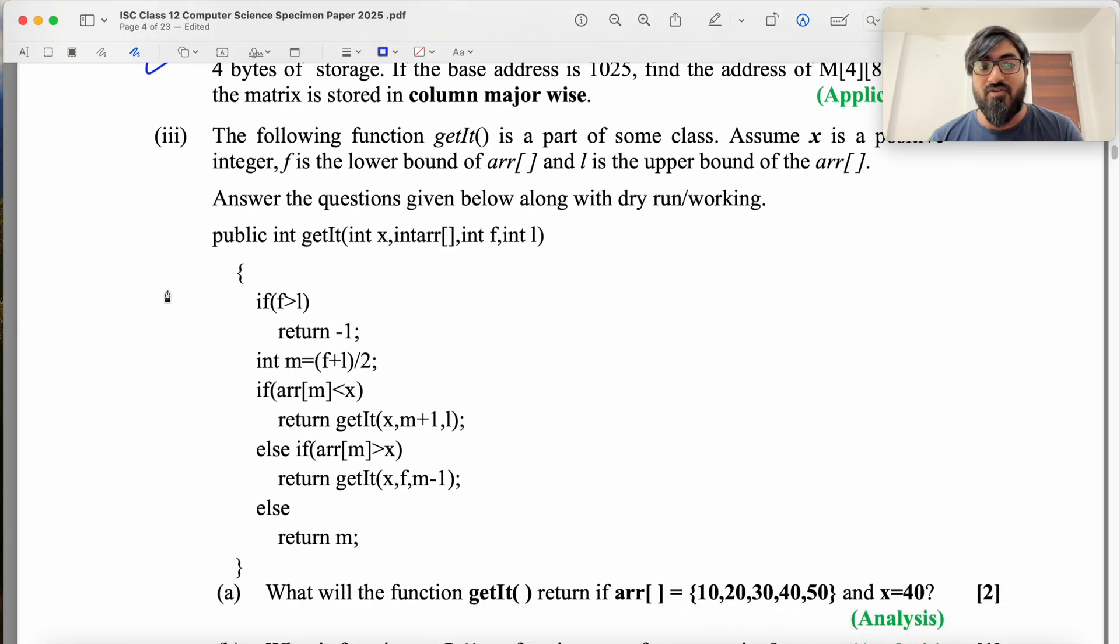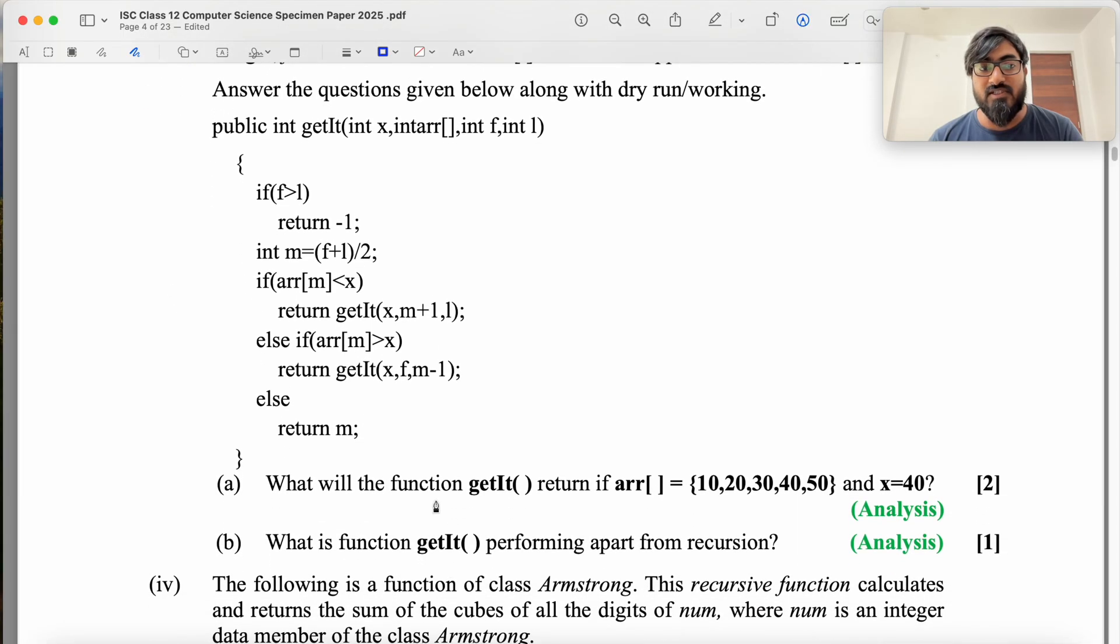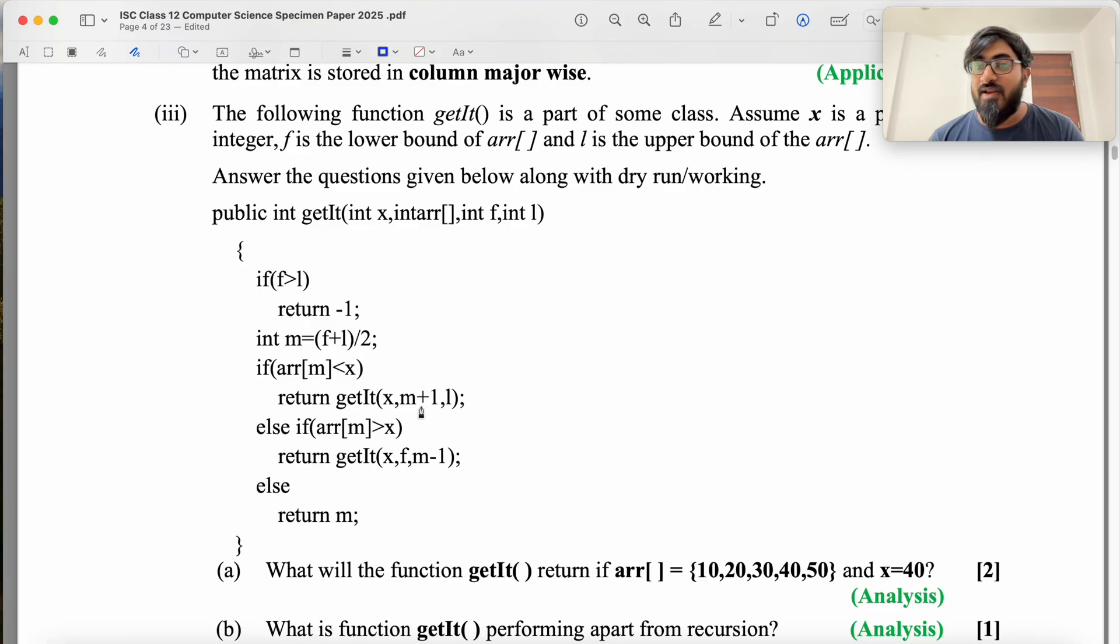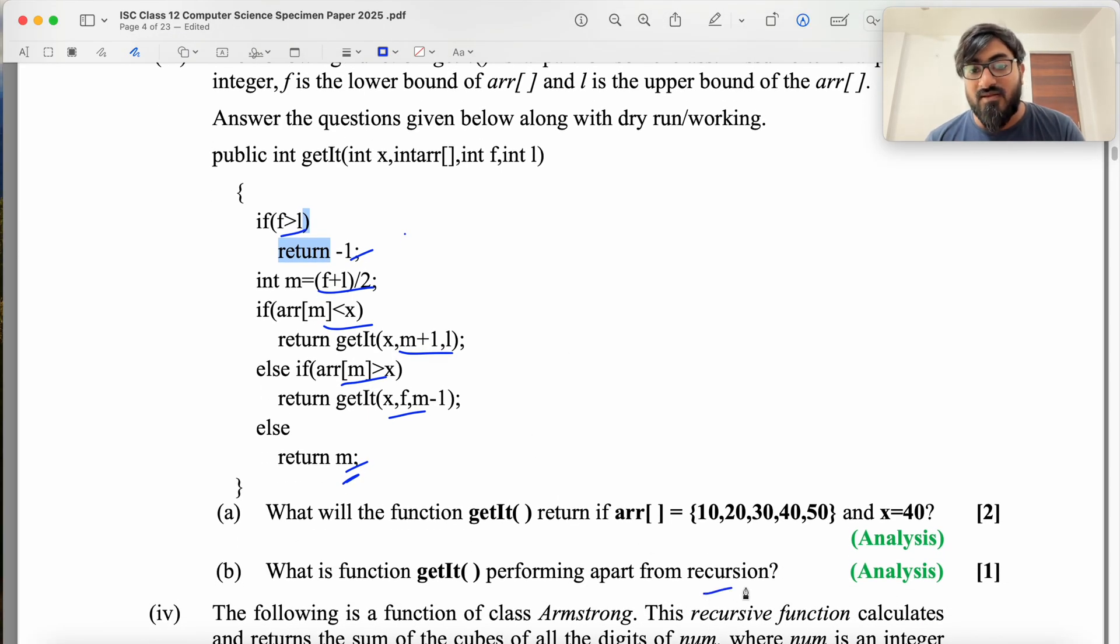Next is you have to predict the output and tell what this function is doing. So when I read it, I can see that this is a binary search because you're calculating the middle value. You're checking if the value is less than the middle value going to the left half. Then you're saying if the value is greater than the middle value going to the right half, else you're returning the index because this is where you're finding the equality of the value. Otherwise you return minus 1 when front becomes greater than large and you have exhausted your whole range. There is no more searching to be done. So this is binary search.